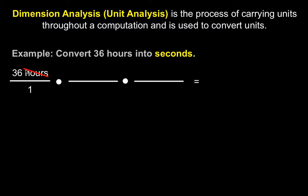I will explain in a minute why there's a red slash here. So we want to convert hours into seconds. Think about what type of relationship hours has to another measurement of time. Well, I know that one hour has 60 minutes.